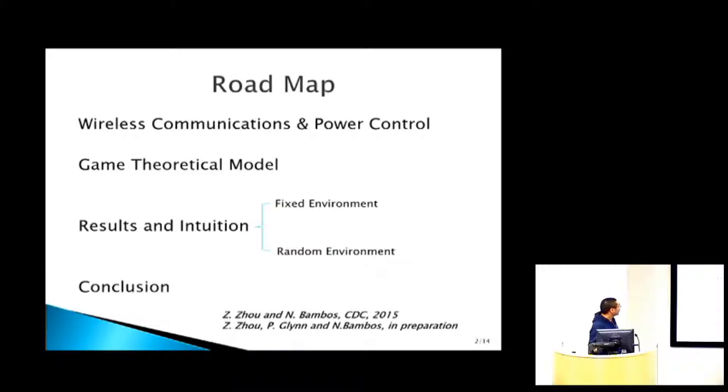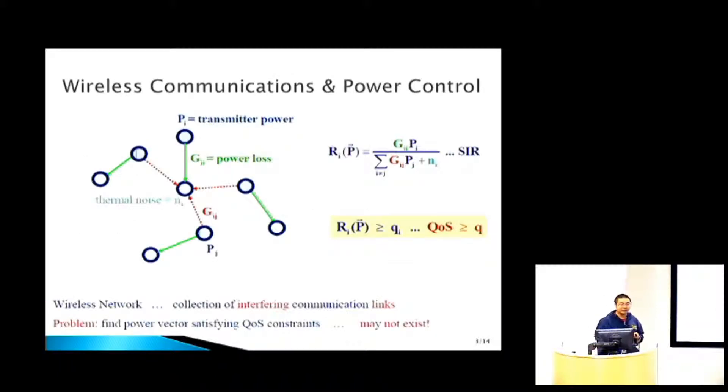Here's the classical power control problem in wireless communication. You have a bunch of wireless communication links, each of which consists of a transmitter and the intended receiver. PI is the power used by transmitter I, and NI is the thermal noise for receiver I. Because everybody is transmitting to everyone else, there's going to be interference.